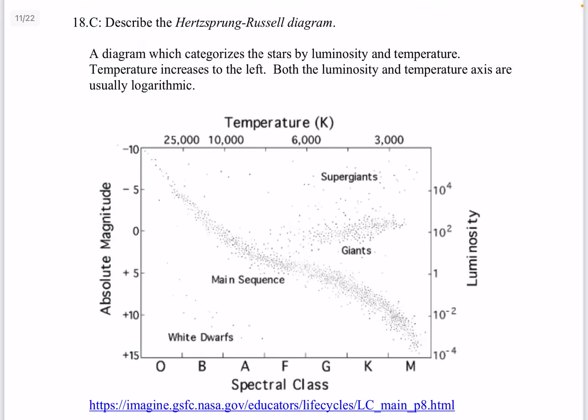Question 18. Describe the Hertzsprung-Russell diagram. This is a diagram which categorizes the stars by luminosity and temperature. Temperature increases to the left. Both the luminosity and temperature axis are usually logarithmic. So you need time to play with this and to look at examples. Because you can see it's logarithmic on the vertical and horizontal. And that's something you probably don't have much experience with.